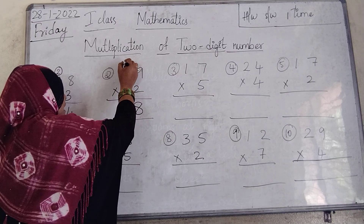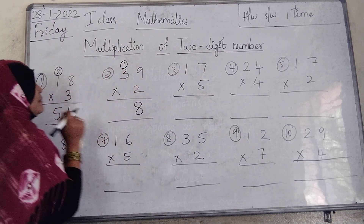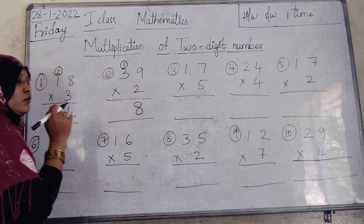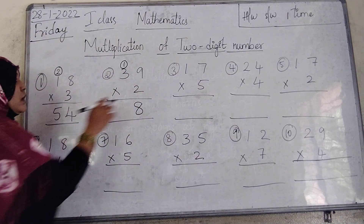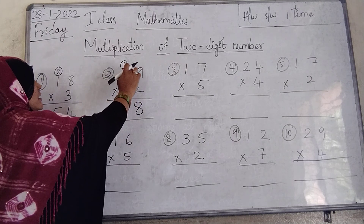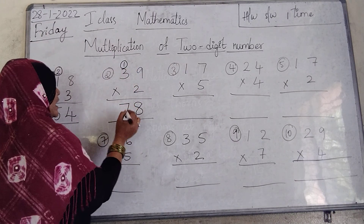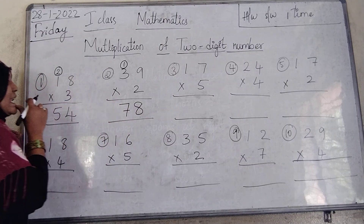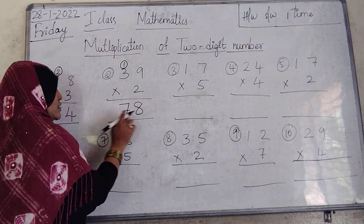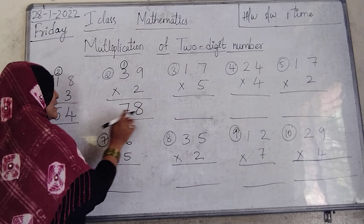Carry 1 on 3, in the 10th place. 2 threes are 6, plus 1 equals 7. So 39 into 2 equals 78. What is the product? 78.